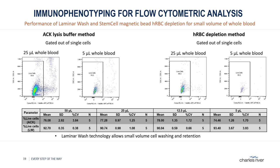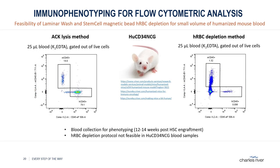However, when simultaneously handling blood samples collected from a humanized mouse — in this case, the newly developed Charles River NGG mouse — we noticed that this new blood processing method is not feasible. So for preparing blood samples from humanized models for immunophenotyping, we need to stick to an adapted ACK lysis buffer method that still can incorporate the laminar wash technique post-lysis.